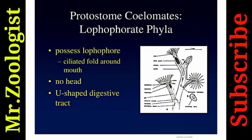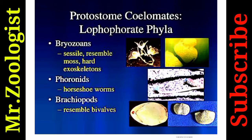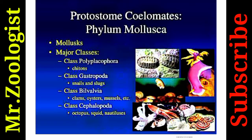Lophophorate phyla possess a lophophore — ciliated folds around the mouth — with no head and a U-shaped digestive tract. Bryozoans are sessile with a hard exoskeleton; phoronids are horseshoe worms; and brachiopods resemble bivalves.